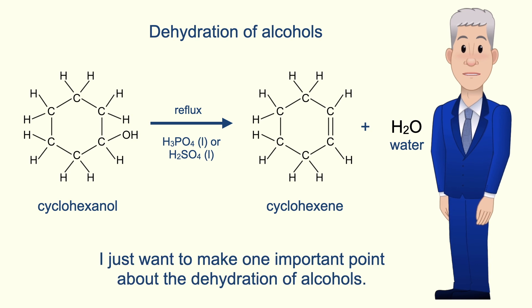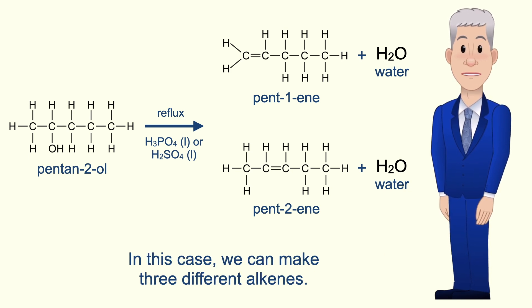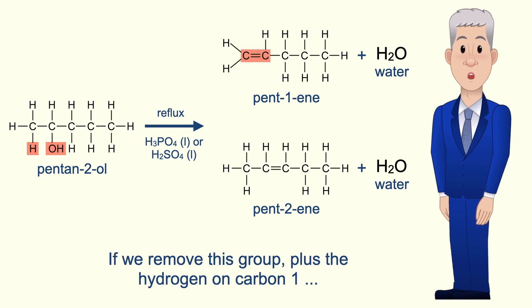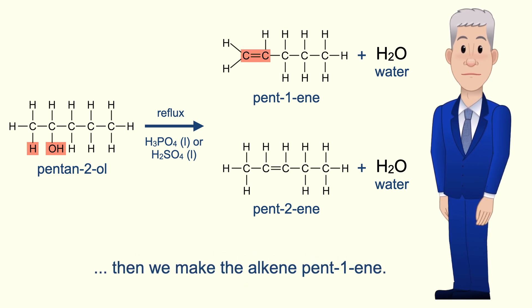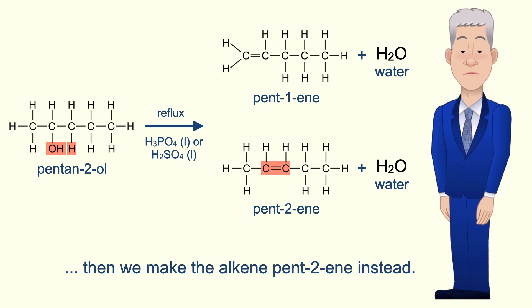I want to make one important point about the dehydration of alcohols. I'm showing you here the dehydration of the alcohol pentan-2-ol. In this case we can make three different alkenes. In pentan-2-ol the alcohol functional group is on carbon 2. If we remove this group plus the hydrogen on carbon 1 then we make the alkene pent-1-ene. However if we remove the alcohol functional group plus the hydrogen on carbon 3 then we make the alkene pent-2-ene instead.